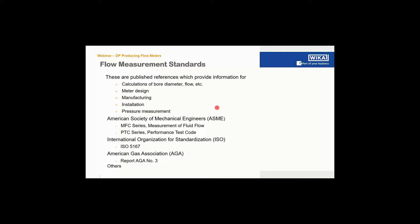If you want to know more about calculation and design considerations, there are several standards published by societies. They cover calculations, meter design, manufacturing, installation requirements, and pressure measurement. The American Society for Mechanical Engineers has the MFC series of flow measurement standards and the PTC series for performance. ISO 5167 covers differential producing elements. The American Gas Association report number three covers orifice plates and is used very often for gas measurement, especially natural gas.